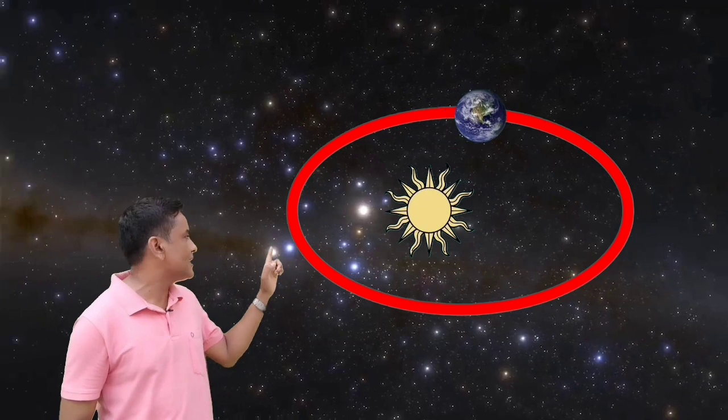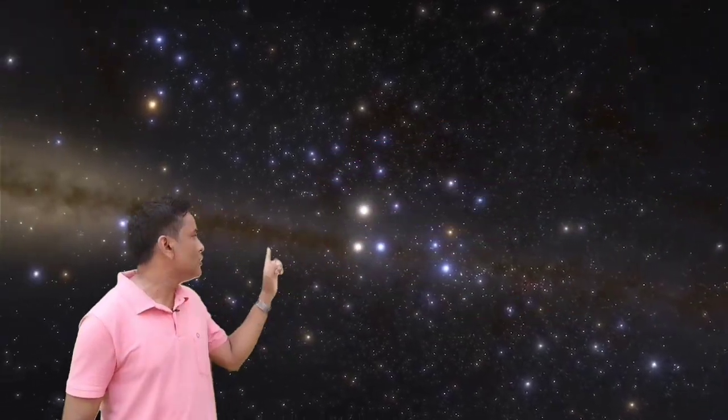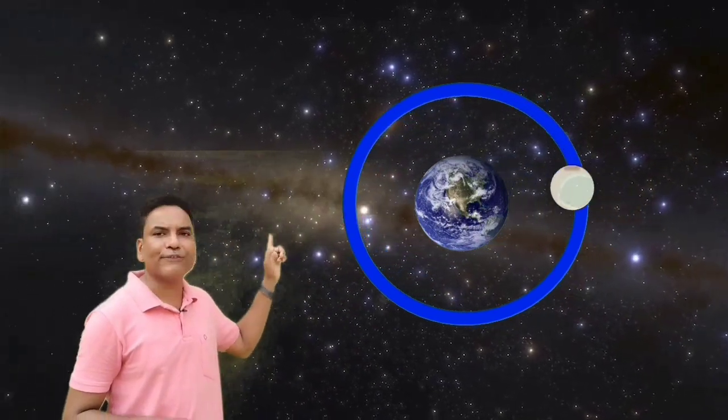Similarly, our Earth revolves around the Sun. The Moon revolves around the Earth, and they don't fall in from their orbits. Now, for better understanding about the planets revolving, we can go to Sir Albert Einstein's Theory of General Relativity.